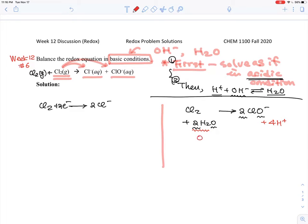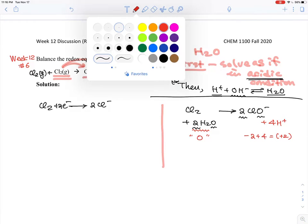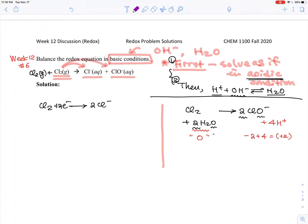Having said that, the left hand side is zero in charge. Right hand side is minus two plus four, then make it plus two at the end. So therefore you need to have two electrons on this side to make the plus two become zero. You need two electrons on this side to make this one now zero on both sides.